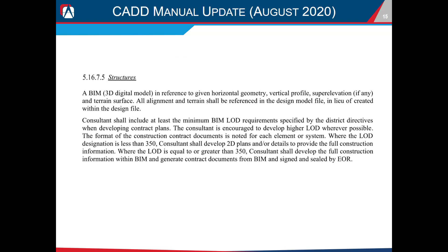The last majorly relevant section is 5.16.7.5. This states that if our LOD is less than 350, we have to develop 2D plans and details for full construction information. When our LOD is 350 or greater, we are able to develop all the construction information within the BIM model and the EOR can sign and seal the model. For pre-stress concrete girder bridges, we can easily achieve LOD 350 and even LOD 400 — the main difference being that we're attaching non-graphical data to model elements in LOD 400. For steel girder bridges, we can achieve mostly the same LODs, but items like field splices and bolted connections require a little extra manual effort or different software.